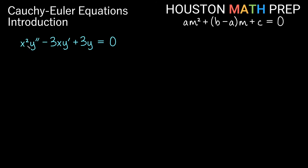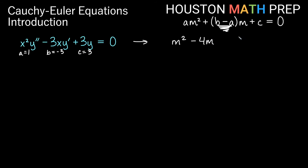Let's solve a basic example: x squared y double prime minus 3xy prime plus 3y equals zero. We can see x squared with y double prime, x with y prime, and no x with the y term — so this is an Euler equation. Here a equals 1, b equals negative 3, and c equals 3. Our equation for m is m squared plus (b minus a)m plus c. Note that b minus a is negative 3 minus 1, which is negative 4. So we have m squared minus 4m plus 3 equals zero.